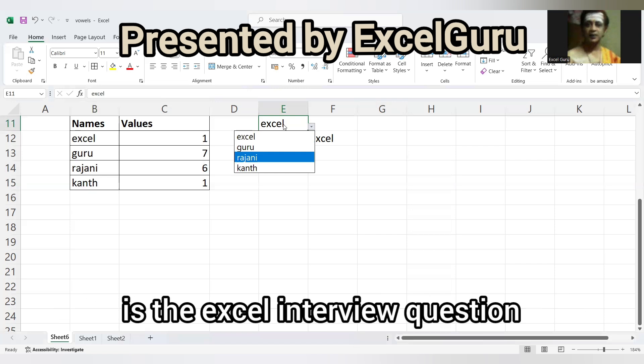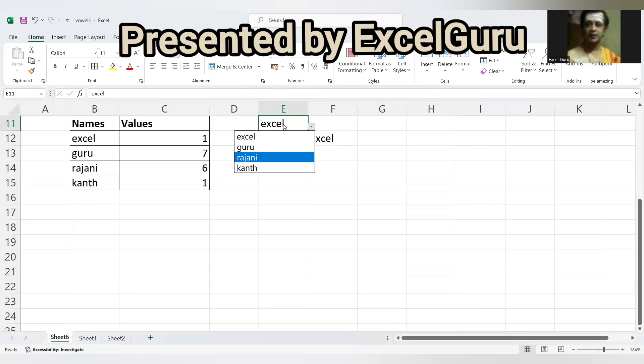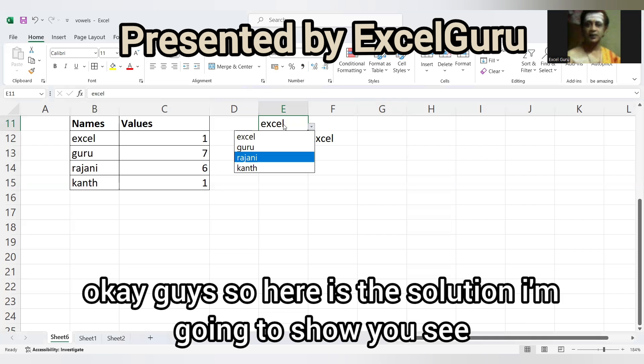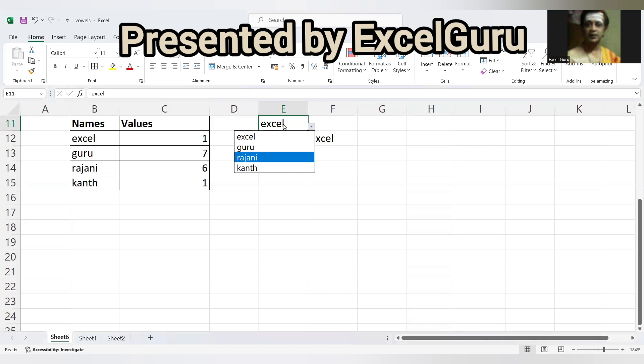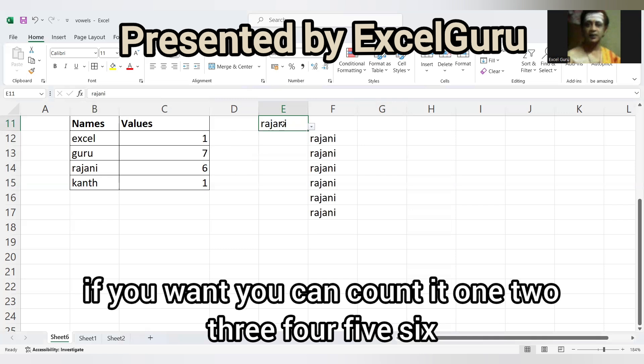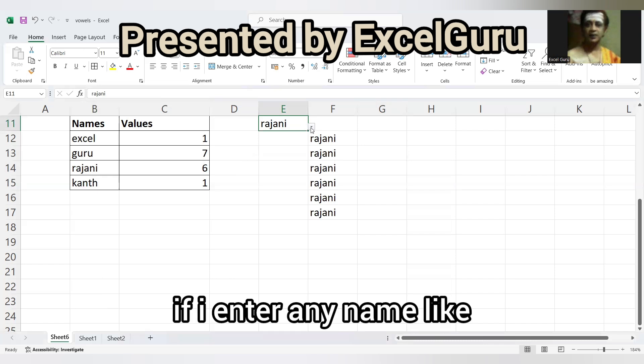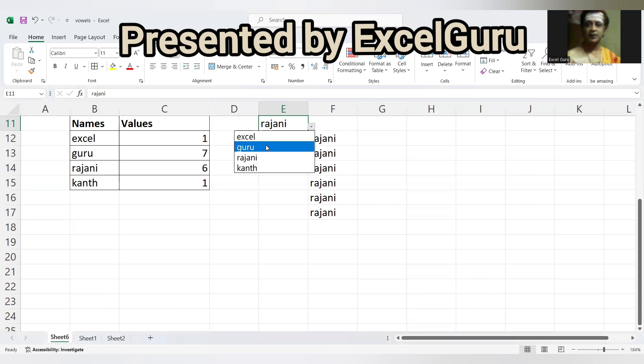This is the Excel interview question. So here is the solution I'm going to show you. If you want you can count it - one, two, three, four, five, six. If I enter any name like Guru, it has to be seven times.